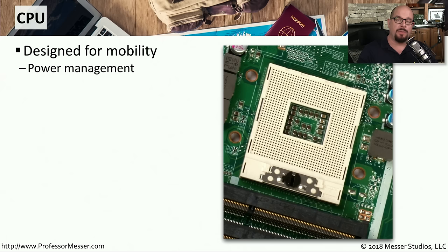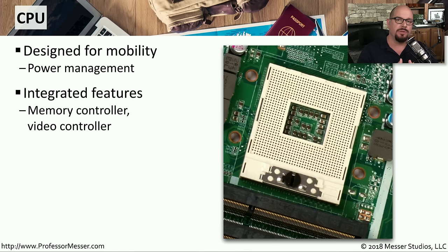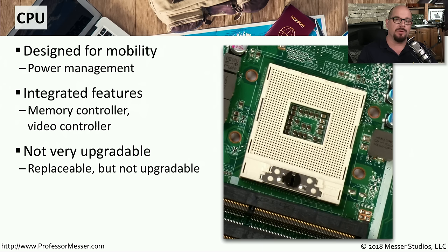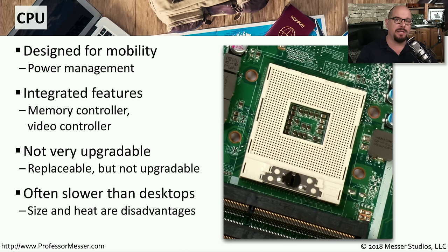Another component that's very different between desktop and laptop computers is the CPU. Laptop CPUs are designed for mobile systems, meaning they use as little power as possible — since you're often running on battery — and create as little heat as possible, because cooling a small laptop form factor is very difficult. As many integrated components as possible are placed on the CPU, such as the video controller and memory controller, to reduce the need for additional motherboard components. On most laptops the CPU is not upgradable; the motherboard is built for one specific CPU. These laptop CPUs generally don't run as fast as desktop CPUs due to heat and size constraints.